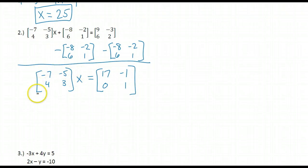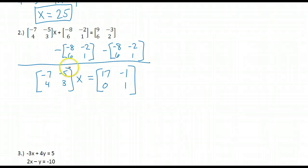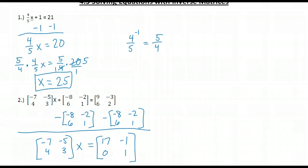Now, to get rid of this matrix, normally I would just divide both sides by this matrix. But I don't have the division property — I don't have the operation of division in the matrix world. Instead, I'm going to want to multiply by the inverse, just like in problem number 1 where instead of dividing by 4 fifths, I multiplied by the inverse.